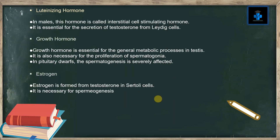Luteinizing hormone: in males, this hormone is called interstitial cell stimulating hormone. It is essential for the secretion of testosterone from Leydig cells. Growth hormone is essential for the general metabolic processes in the testis. It is also necessary for the proliferation of spermatogonia. In pituitary dwarfs, spermatogenesis is severely affected.